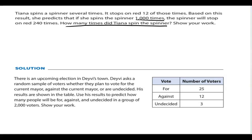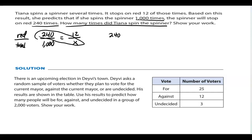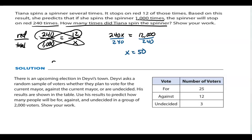We use her experimental probability, which said she landed on red 240 times out of a total of 1,000 times, and set that equal to our theoretical probability. If it stops on red 12 of those times, how many times did she spin it? We don't know, so we write: 240 over 1,000 equals 12 over x. That gives us 240x equals 12,000. Dividing both sides by 240, x equals 50. She spun the spinner 50 times.